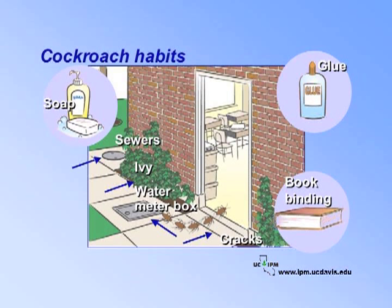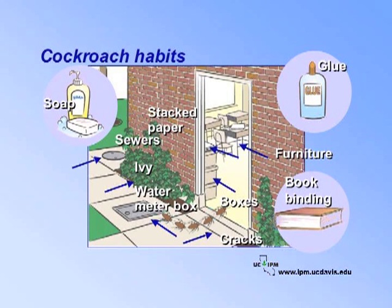Indoor roaches are often found in dark hiding places, near water and heat sources such as sinks, refrigerators, freezers, or any electrical appliance that runs constantly. They are also found in stacked paper, corrugated cardboard or boxes, hollow legs of furniture, or behind door frames. They prefer to crawl along edges of counters and floors and scatter when they sense movement.